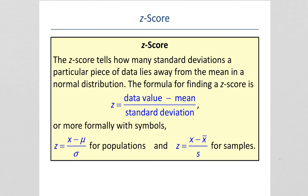When we talked about the 68-95-99.7 rule, we talked about the data being one, two, or three standard deviations from the mean.